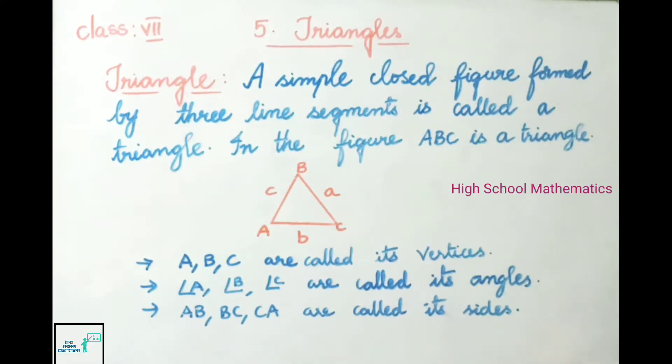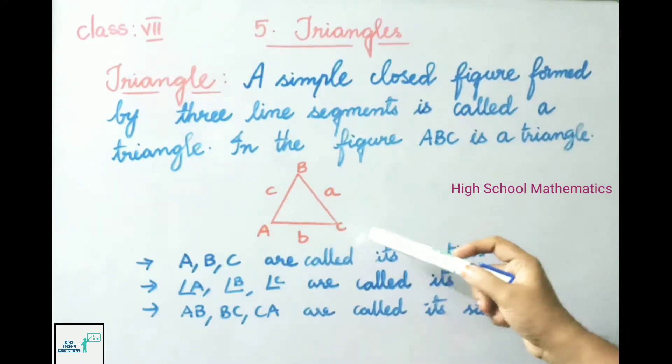Before going to the exercise, let us see the definition of triangle. A simple closed figure formed by three line segments is called a triangle. In the figure, ABC is a triangle.